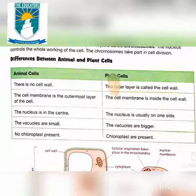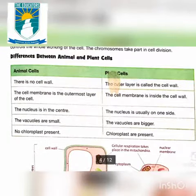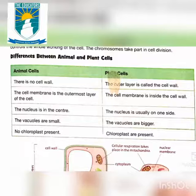Plant cells: the outer layer is called the cell wall. Animal cells: the cell membrane is the outermost layer of the cell. Plant cells: the cell membrane is inside the cell wall. Animal cells: the nucleus is in the center.